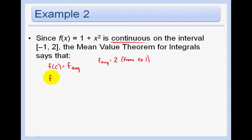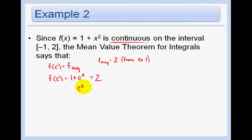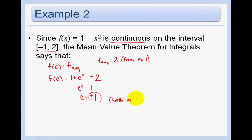So f of c, which is just 1 plus c squared, must be equal to f average, which is 2, at some c. So we get c squared equals 1, c equals plus or minus 1. And now remember, just like we did in our other examples with the Mean Value Theorem, we need to make sure that we're on the interval — and both are. So our answer is plus or minus 1; both are in the interval.